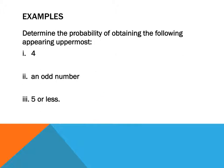Determine the probability of obtaining the following appearing uppermost. So when I roll the dice, that the four appears on the top. The theoretical probability of rolling four equals the number of favourable outcomes. The number of possible outcomes on my sample space is six. The number of favourable outcomes is one, because there's only one four on that six. So the probability of a four appearing on the top is one out of six.